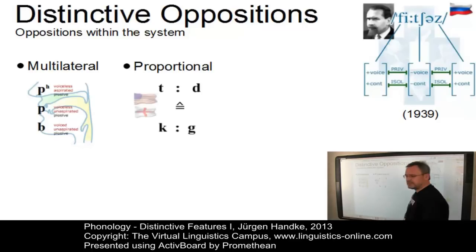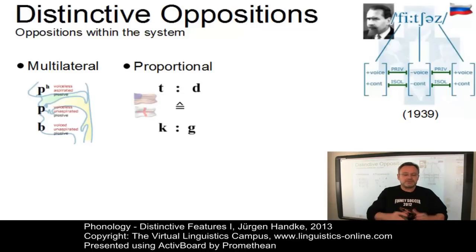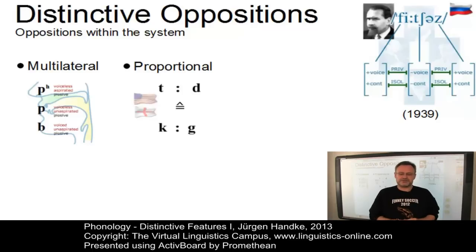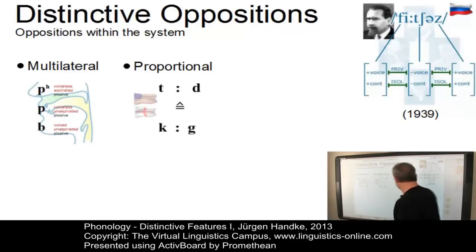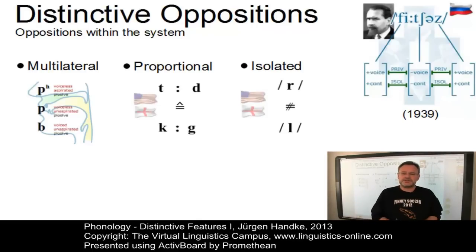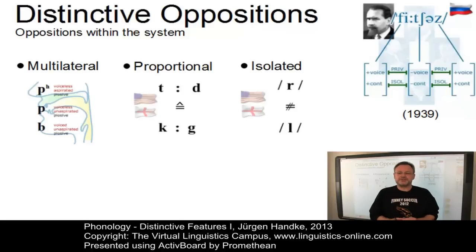An opposition can be defined as proportional if the relation between its members is identical with the relation between the members of another opposition within the system. The difference between T and D in English is identical with that of K and G in English — thus, a proportional relation. An opposition can be defined as isolated if no other segments stand in the same relation in the language. For example, the opposition between an alveolar approximant and an alveolar lateral consonant in English is isolated since no other segments stand in the same opposition.